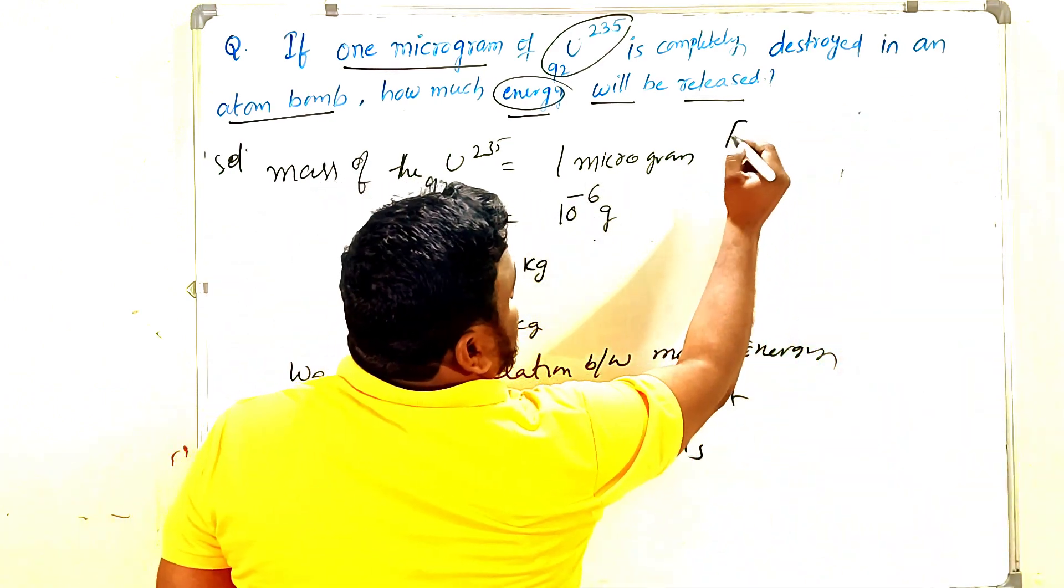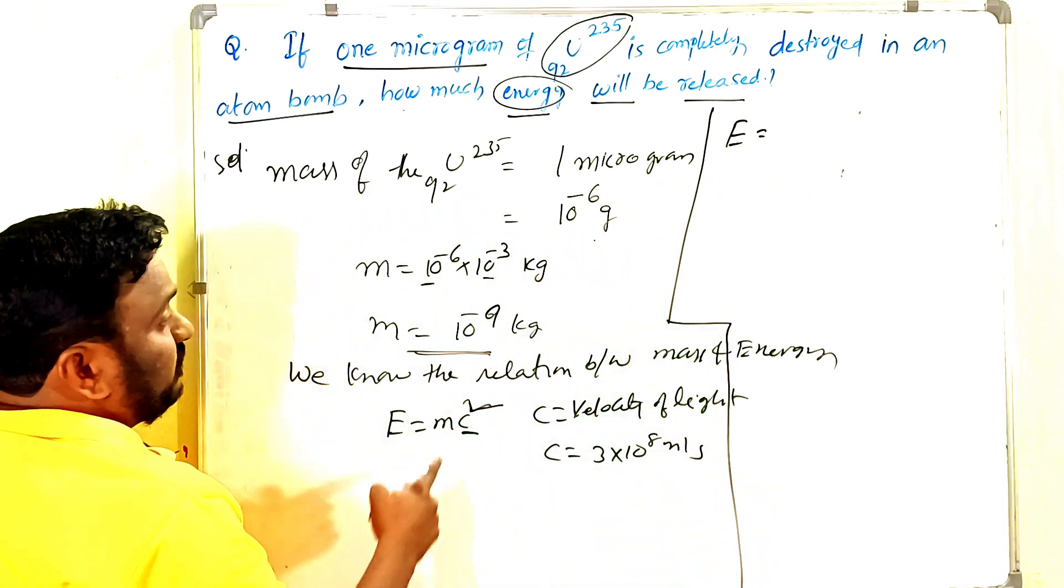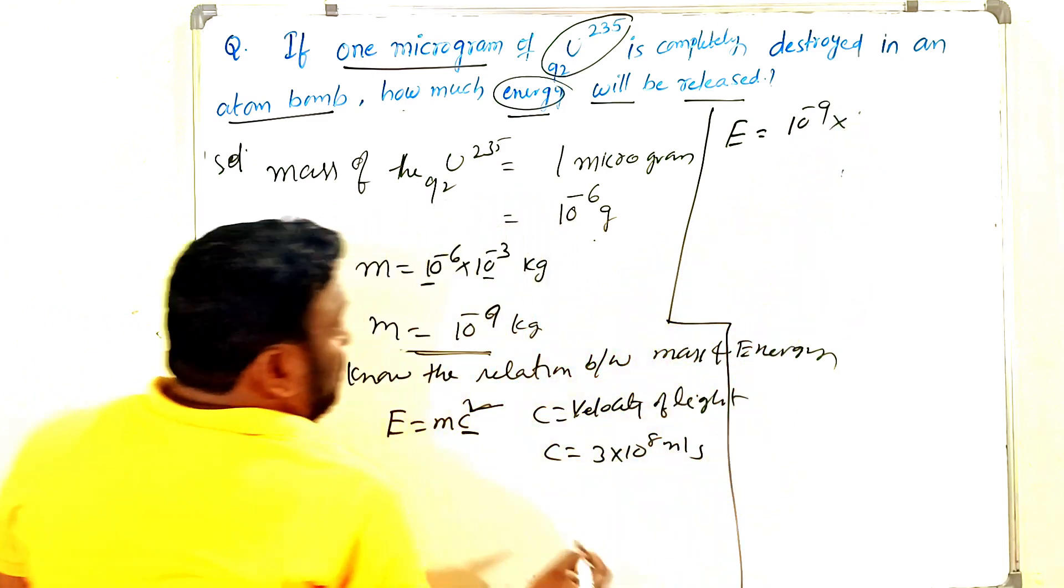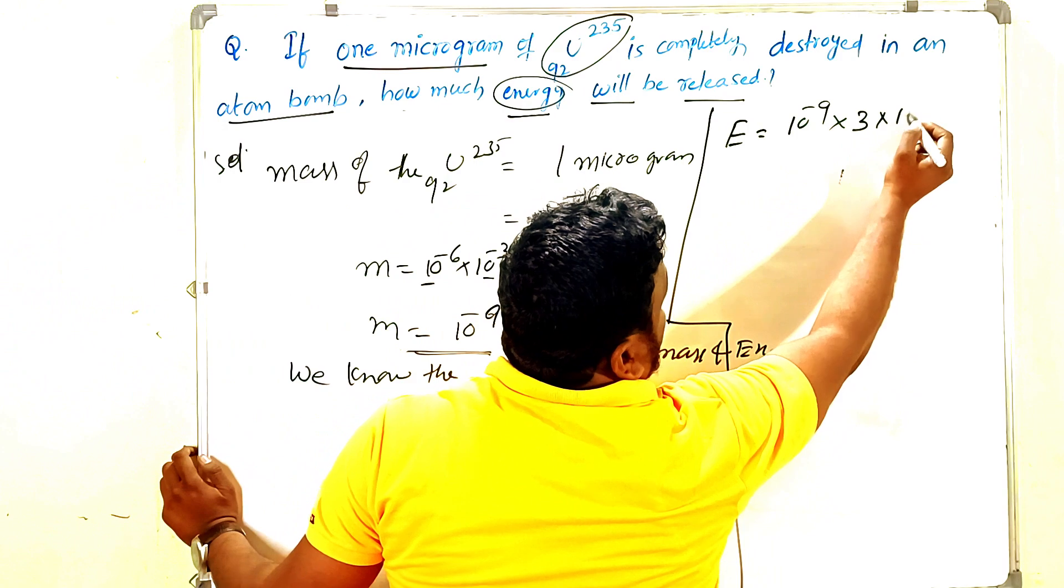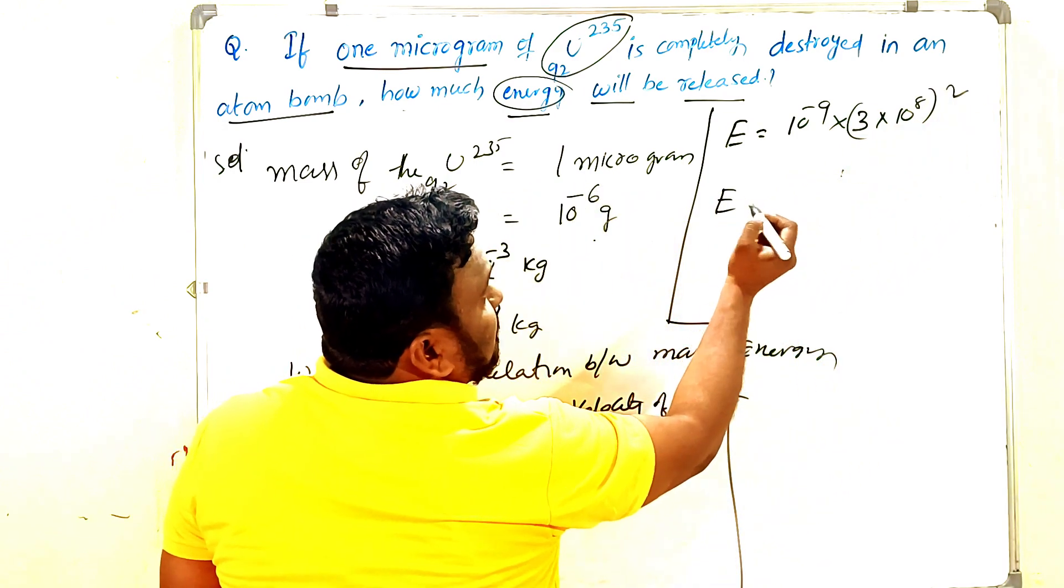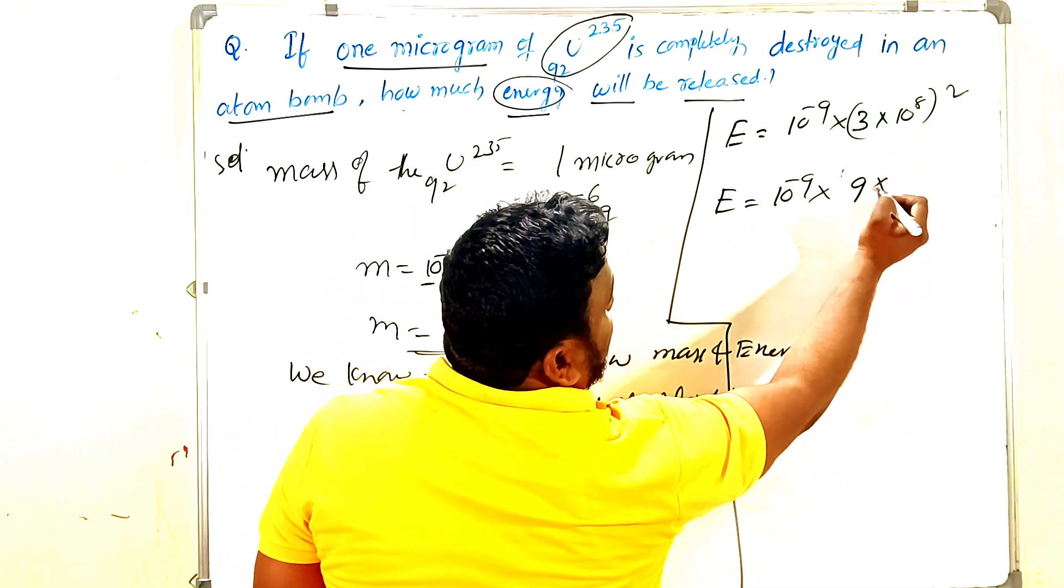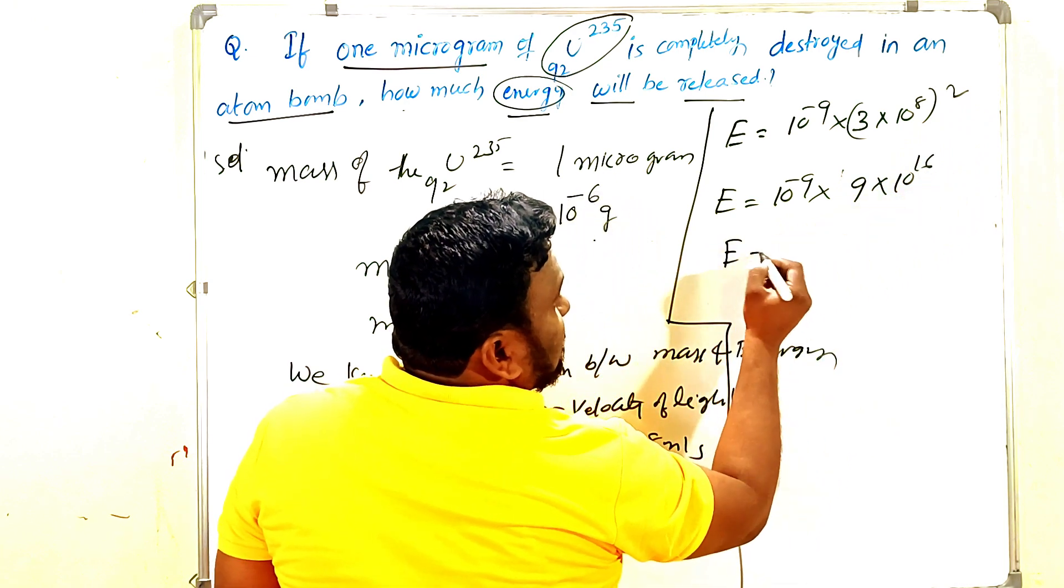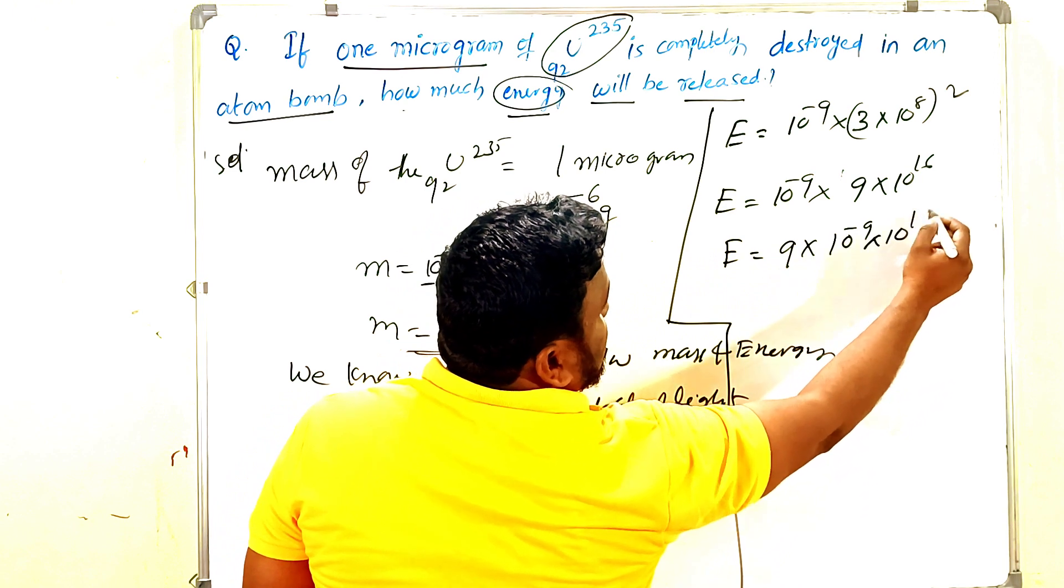So E is equals to what? 10 power of minus 9 into c square. What is c value? 3 into 10 power of 8 whole square. That means E is equal to 10 power of minus 9 into 3 square, which is 9, and 10 power of 8 into 16. So e is equals to 9 into 10 power of minus 9 into 10 power of 16.